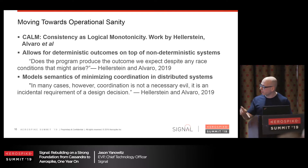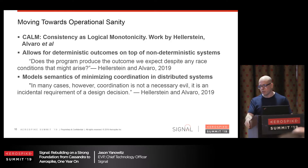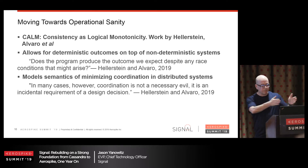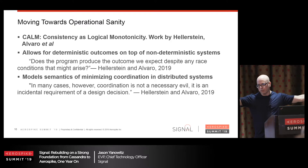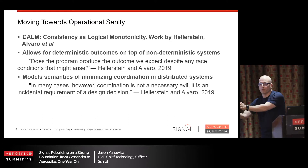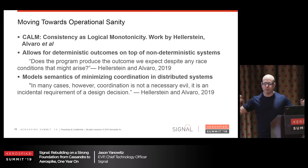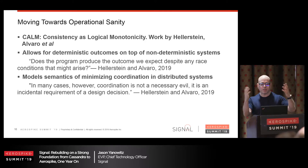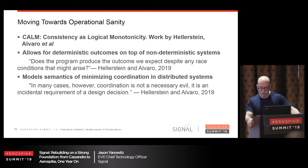The CALM theorem says the only way you can have a coordination-free computing system — where individual actors never have to talk to each other — and have it be consistent over time, is if it's logically monotonic. That's a very strong statement and they've proved it. It also gives you a nice way to say there's a boundary: you can have logical monotonicity for 90% of your system, and then at a boundary line maybe you need some coordination, and that's okay. You can reason about the semantics on either side of that boundary differently.